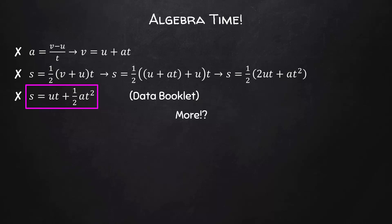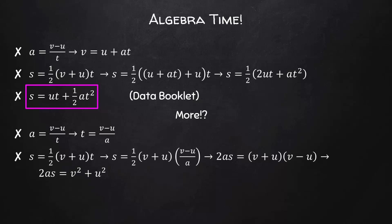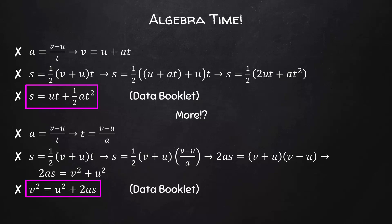Let's go back to our equation for acceleration, this time arranging it as T equals (V minus U) divided by A. If we substitute in for T in the distance formula, and after combining variables and FOILing the binomials, we end up with the equation V squared equals U squared plus 2AS.